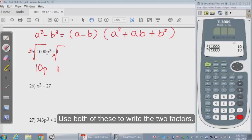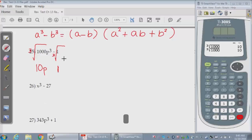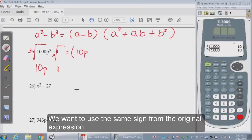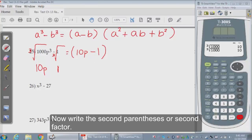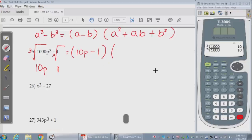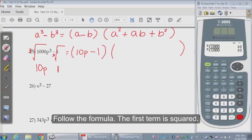Now use both to write the two factors. Follow the formula. First, same, same sign, 1. Now write the second parenthesis. Write the second parenthesis or the second factor. Follow the formula.